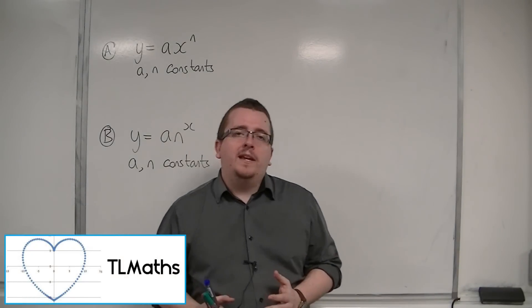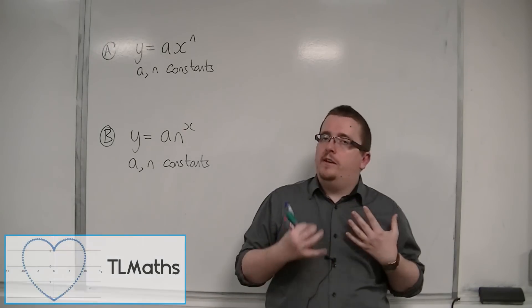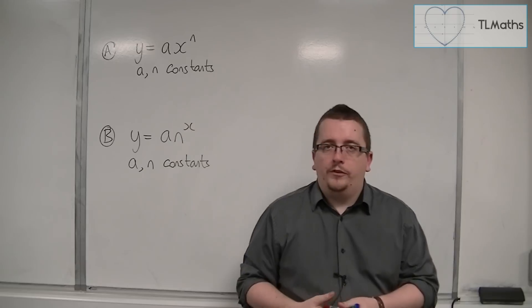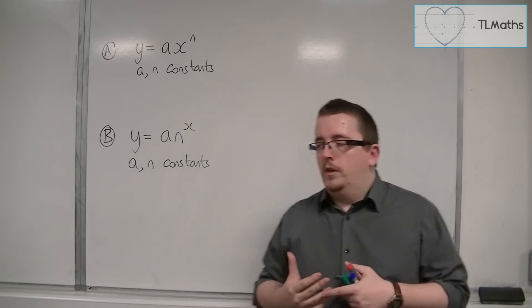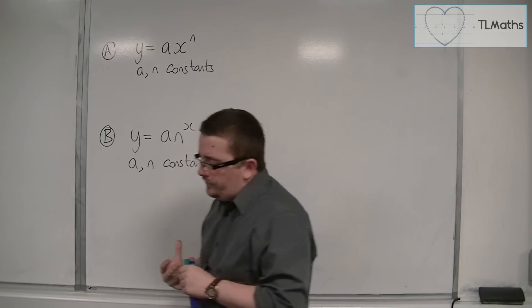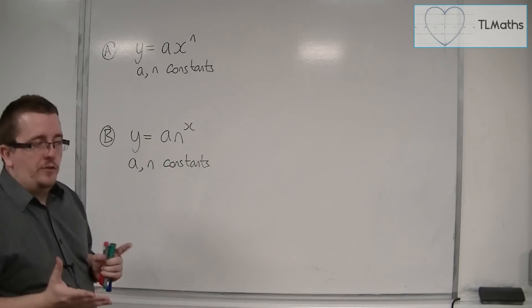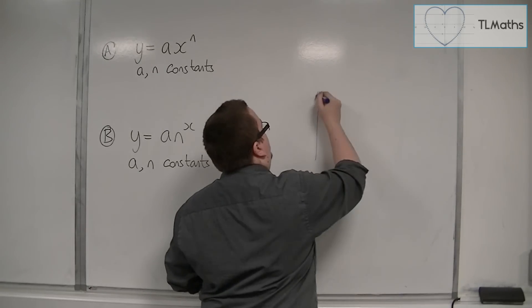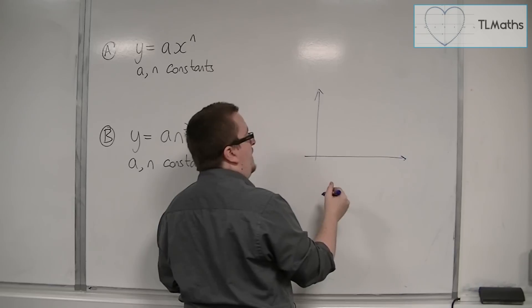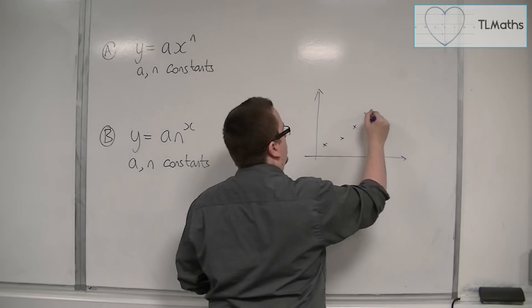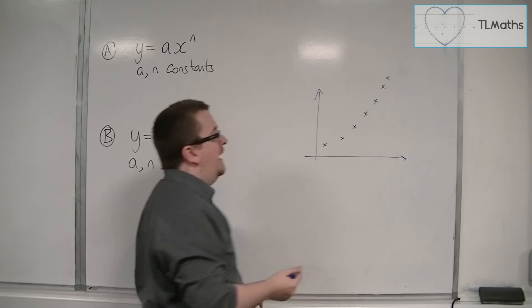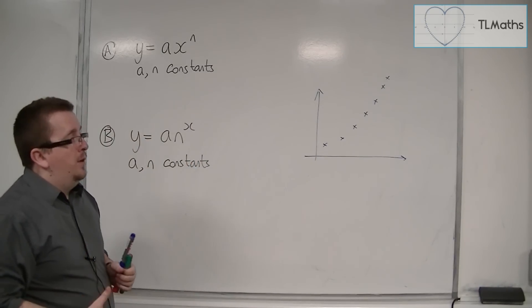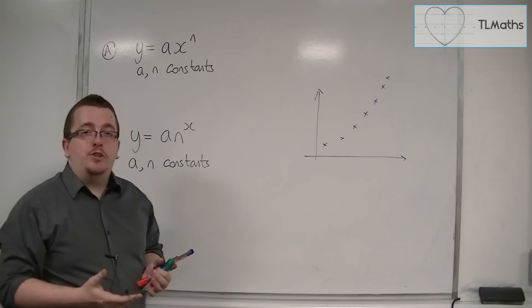In this video, we're going to be looking at reducing to linear form. To give you a bit of background, let's say that there is a scientific experiment and the scientist plots their data and the data looks something like that. So the data that they've plotted doesn't look like it's going in a straight line.